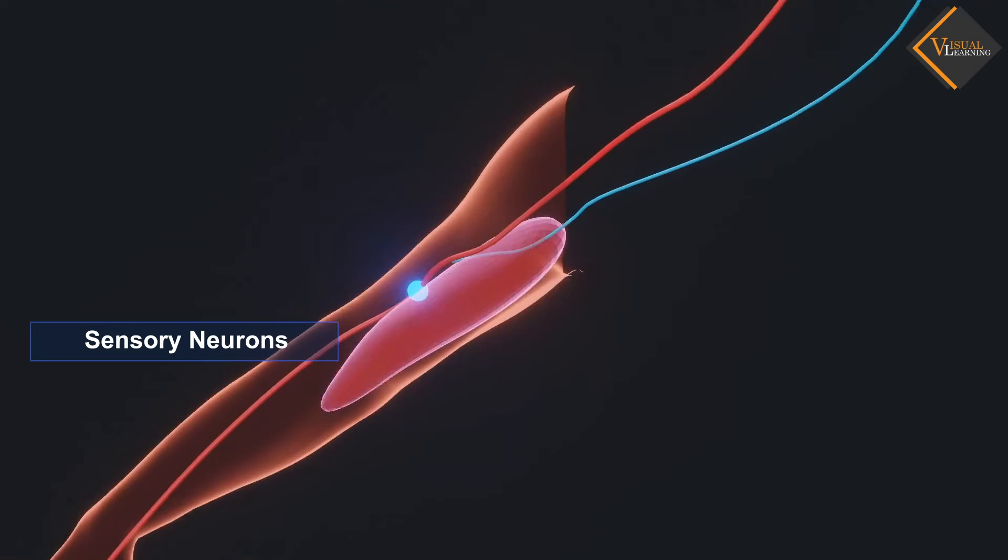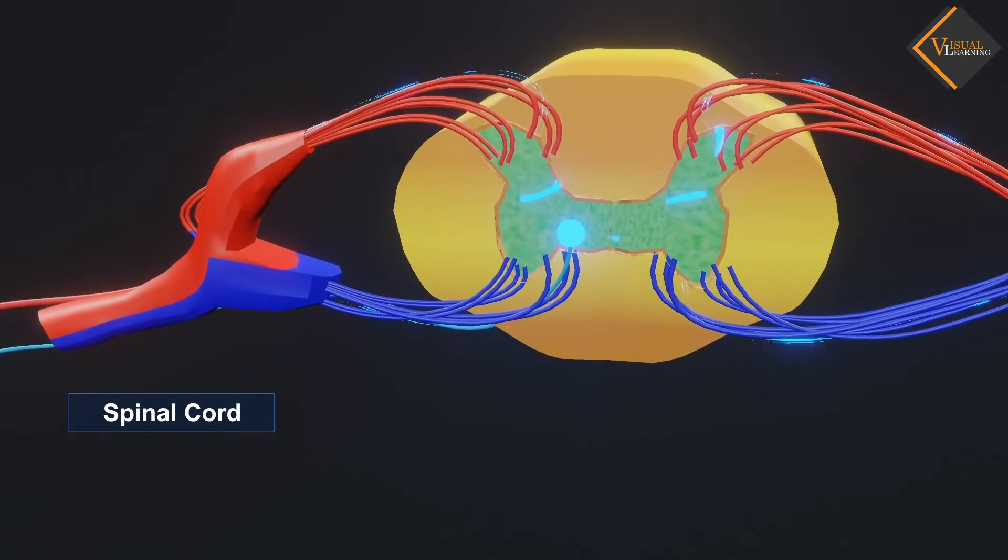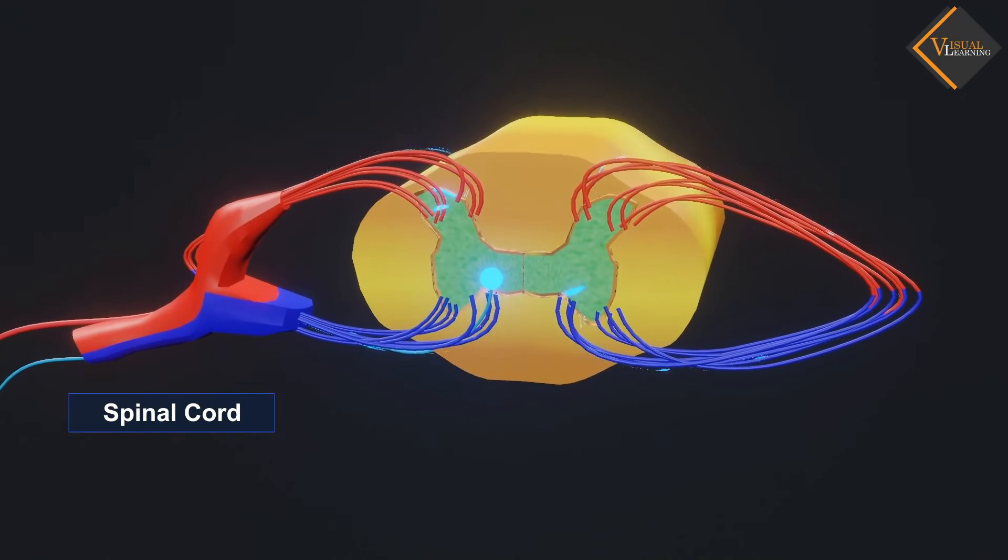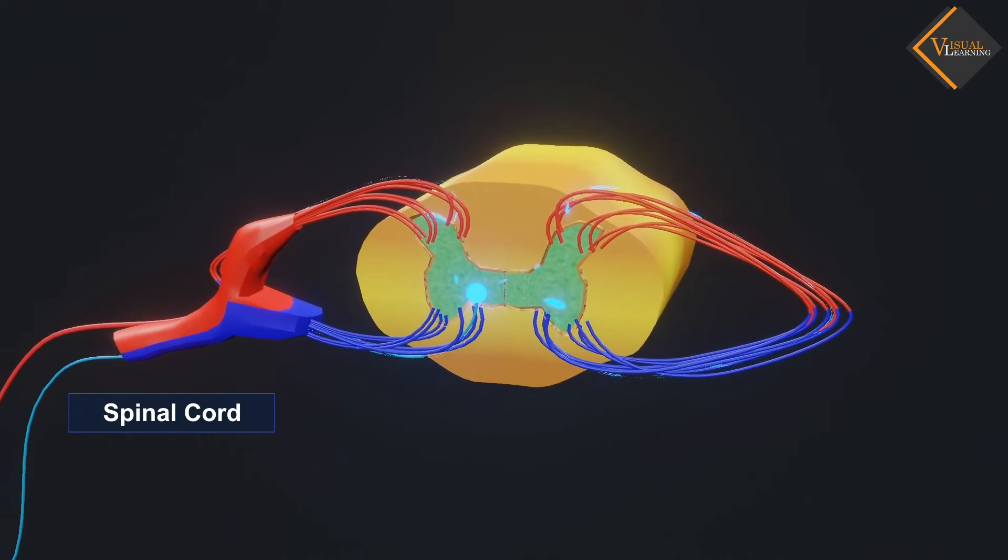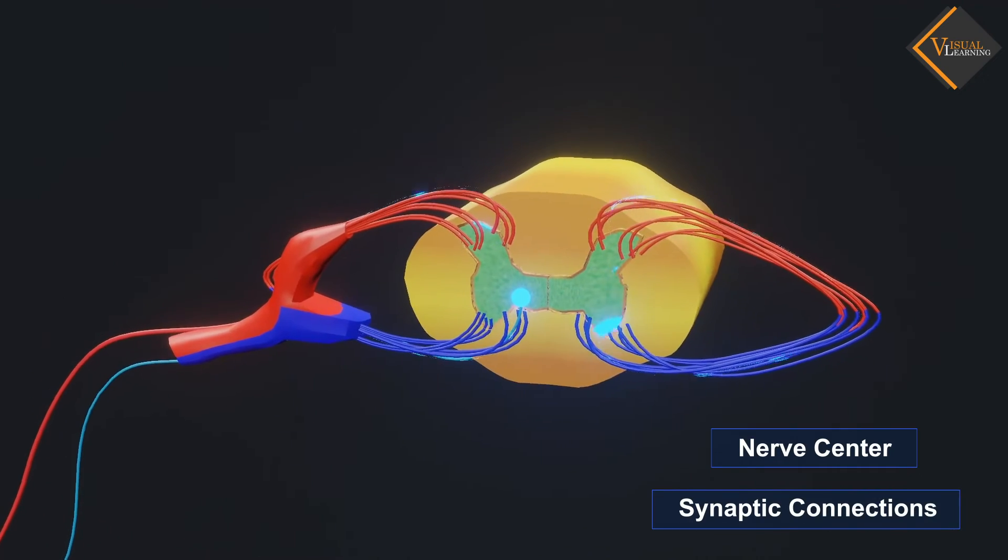Sensory neurons carry the stimuli from receptors to the spinal cord. The ganglion of the spinal cord has the sensory neurons. The spinal cord is the nerve center where synaptic connections are formed.